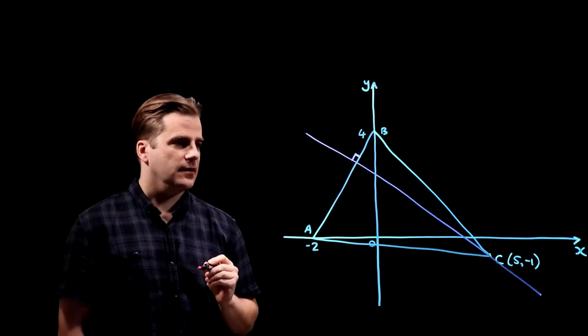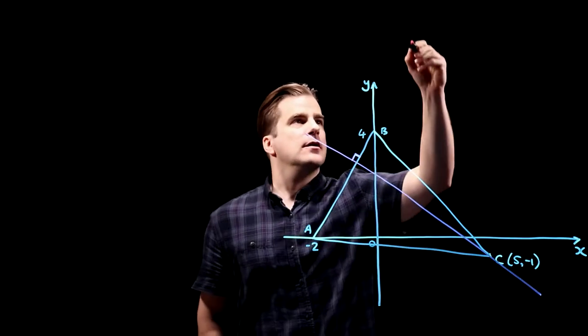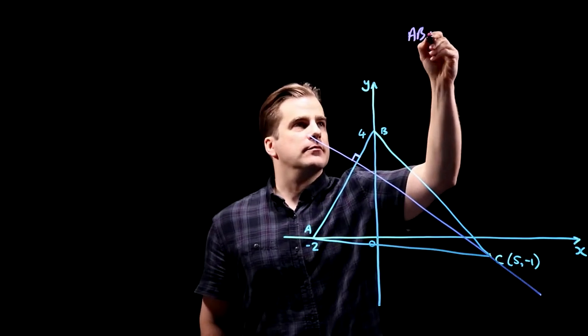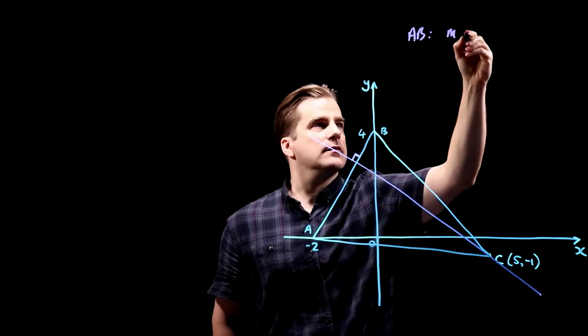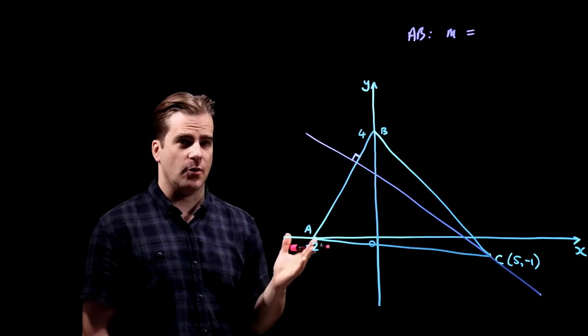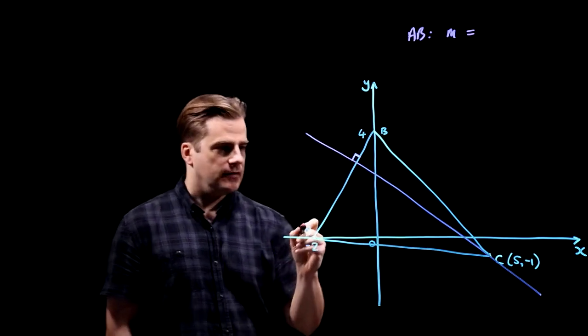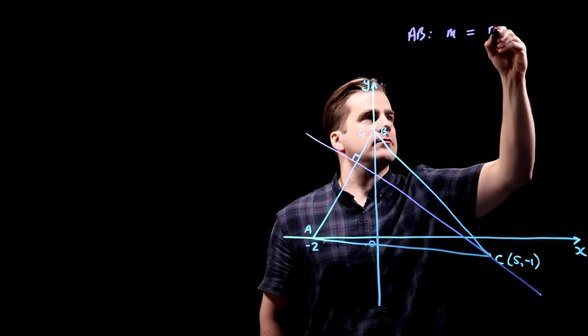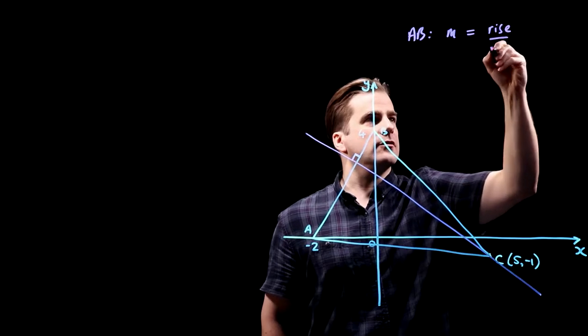So AB, the gradient M—gradient is represented by the letter M, I don't know why it just is. Gradient is rise over run.